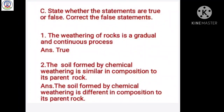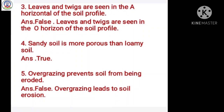The soil formed by chemical weathering is different in composition to its parent rock. Number 3: The leaves and twigs are seen in the A horizon of the soil profile. Answer is false. The leaves and twigs are seen in the O horizon. Number 4: Sandy soil is more porous than loamy soil. Answer is true. Number 5: Overgrazing prevents soil from being eroded. Answer is false. Overgrazing leads to soil erosion.